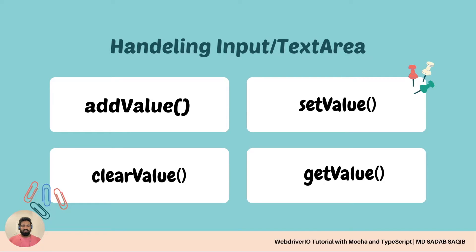The functions addValue, setValue, clearValue, and getValue are used to interact with and handle these scenarios. For all these functions, the documentation is already available in the WebdriverIO docs — I'll leave a link in the description. For all these options, you can go and check how each thing works.